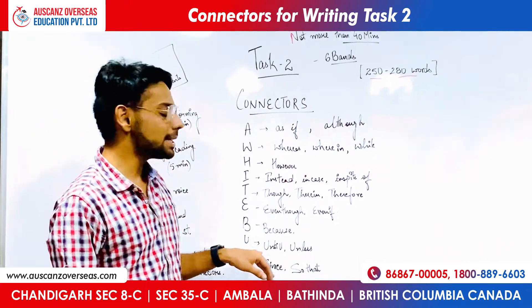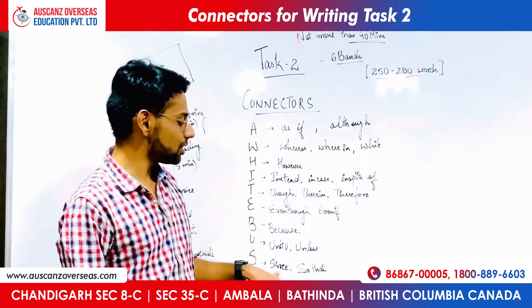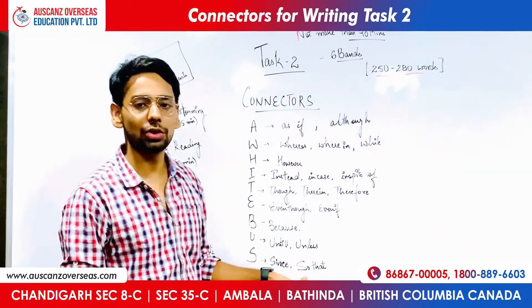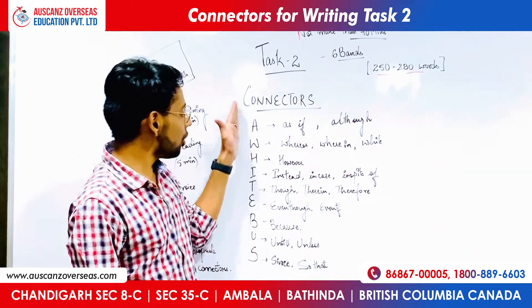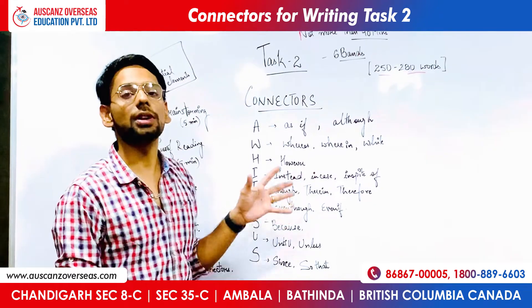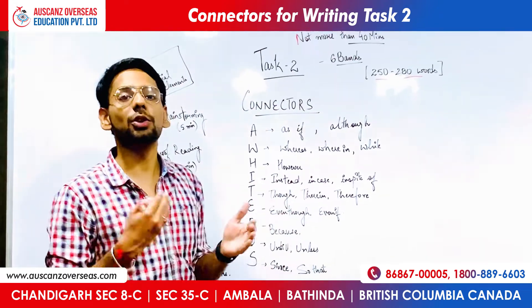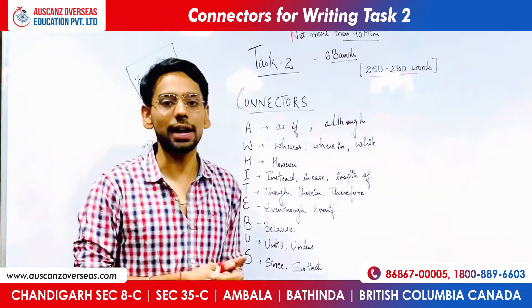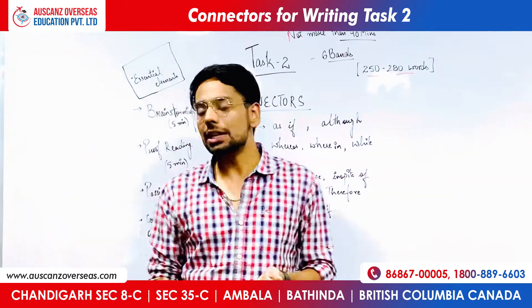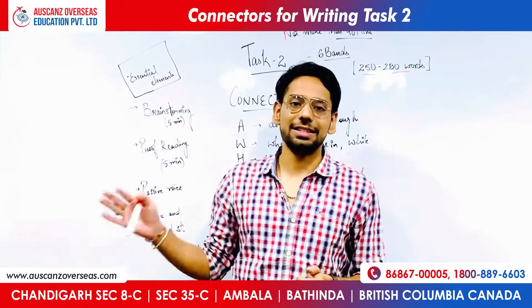B is for 'because'. U is 'until' and 'unless'. And S is for 'since' and 'so that'. So you can use these kinds of connectors to enhance your vocabulary and join two sentences in one, and you can easily form complex and compound sentences. Thank you so much.